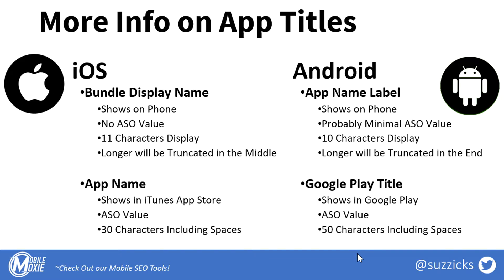In iOS, we call this the app name, and you have 30 characters to optimize including spaces. In Google Play, we call it the Google Play title, sometimes the app name, but generally it's referred to as the title, and it gets 50 characters including spaces.